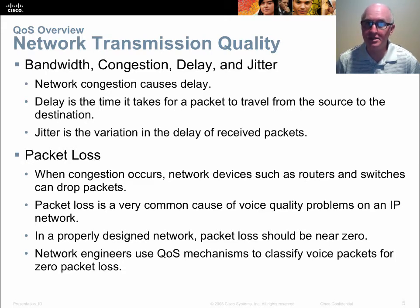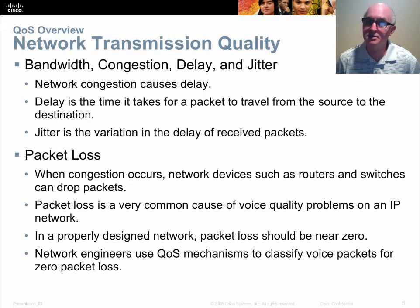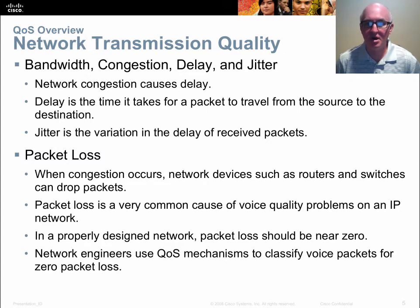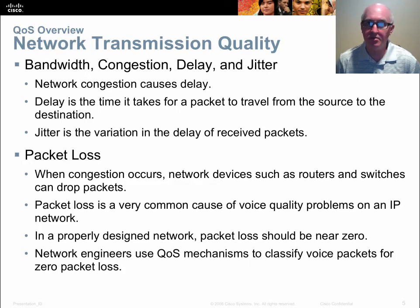Jitter can basically destroy your voice and video quality very quickly. And of course, packet loss — a lot of packets use time-to-live values and the applications are only going to wait so long for those packets to get to the other side, especially with video and voice. Other real-time traffic is simply no longer usable after a certain short period of time. In a properly designed network with quality of service mechanisms in place, we can prioritize these types of traffic over others that may be more delay tolerant, such as email or file transfer.